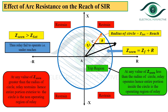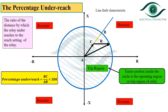We can say that arc resistance causes the simple impedance relay to underreach. The figure shows the characteristics of the simple impedance relay on the RX plane with the fault characteristics of the line superimposed. Considering an arcing fault with fault resistance R at point C, the impedance seen by the relay lies on the boundary between the trip and restraining regions. Thus any arcing fault just beyond point C will not be detected, confirming that the simple impedance relay under-reaches due to arcing faults.